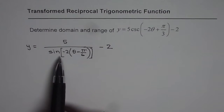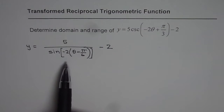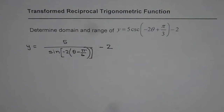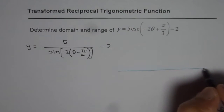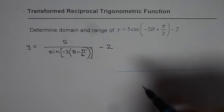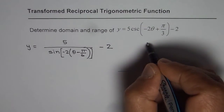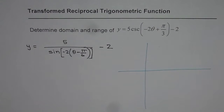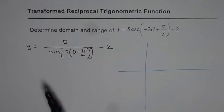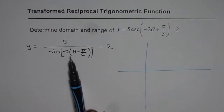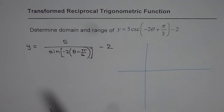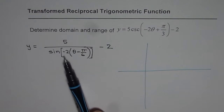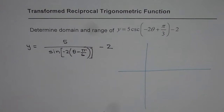Now let us try to find the domain and range of this function, and in the next video we'll sketch it. The domain means that all the zeros of the denominator will be the vertical asymptotes and will not be in the domain of the given function. So we need to find the zeros of sine of (minus 2 theta minus pi by 6). That is the basic issue.